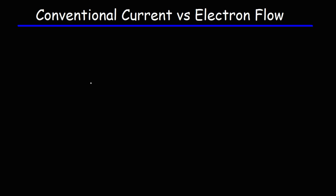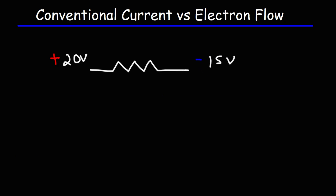So let's say if we have a resistor, and on one side of the resistor, we have an electric potential of positive 20 volts, and the other side, let's say it's negative 15 volts. The voltage, which is the electric potential difference, is 35 volts across this resistor.